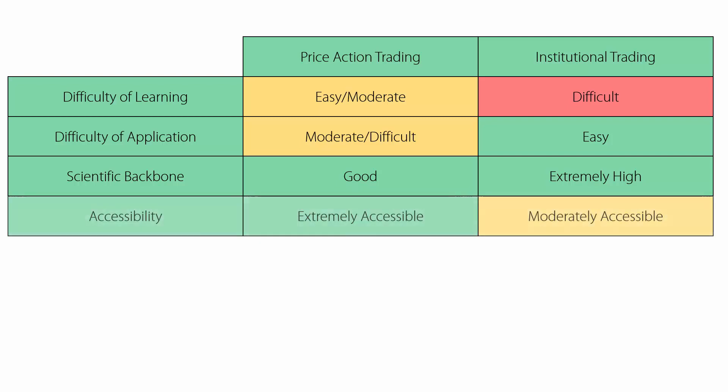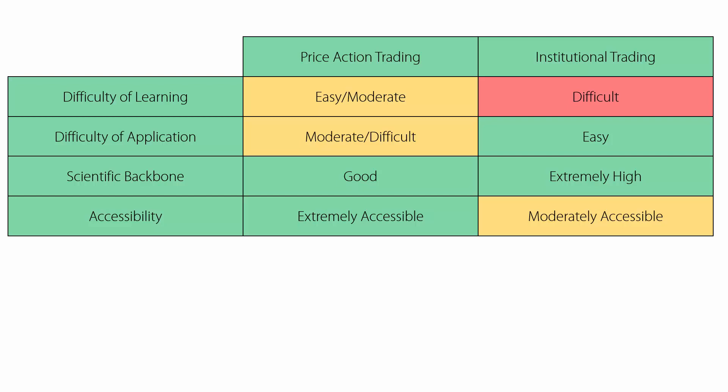In terms of accessibility, price action trading is a winner because nowadays finding a broker that offers a platform to observe a price chart and trade through it is the easiest thing in the world. For institutional trading methods, the story is a lot different. It's relatively easy to find a broker that allows you to trade derivatives, for example, but these brokers usually don't offer the complete tools for market analysis, and you have to go after third-party services. In the institutional realm, it's not uncommon for people to develop their own analytical tools — that's a disadvantage, obviously, but if you can do that, you'll be far ahead of the herd.